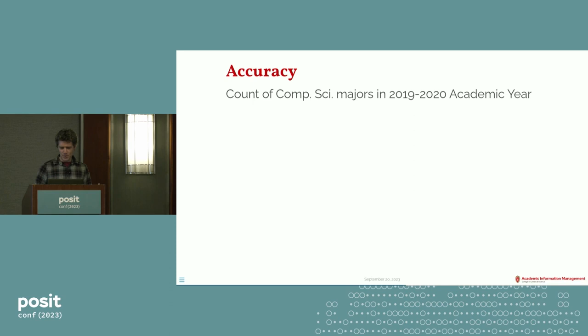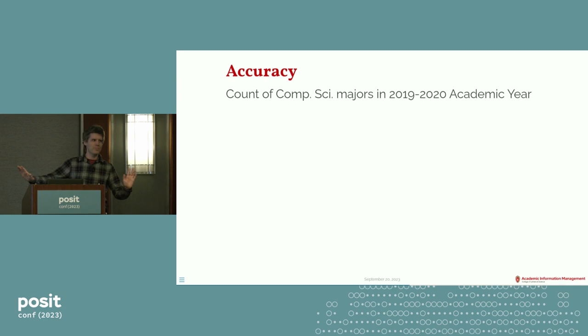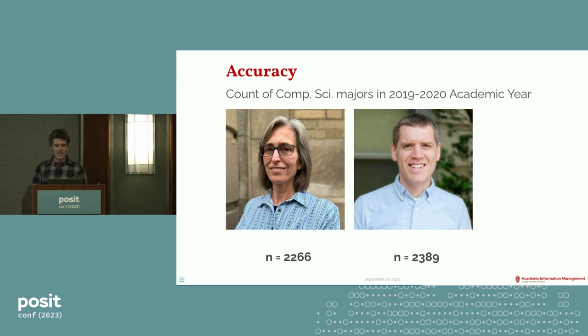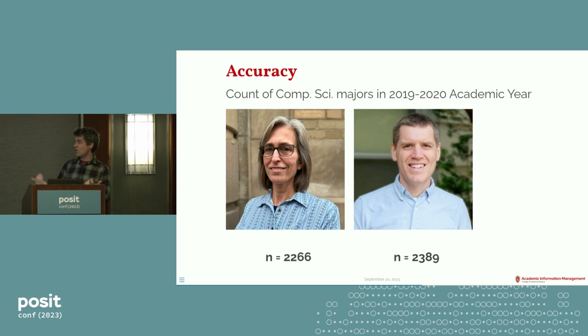Let's imagine that Susan and I are each given a task to produce a report involving computer science majors — specifically, how many there were in 2019 and 2020. These might be separate reports where we don't talk to each other. And what happens if, God forbid, we come up with different numbers? Susan comes up with 2,266; I come up with 2,389. This could affect funding for these departments and affect the analysis, because it seems like there are different students in each count. It's really embarrassing. So I'm going to show you how you might solve some of these accuracy problems.